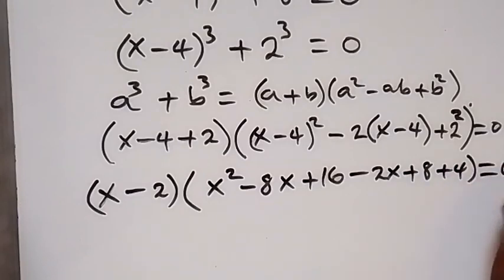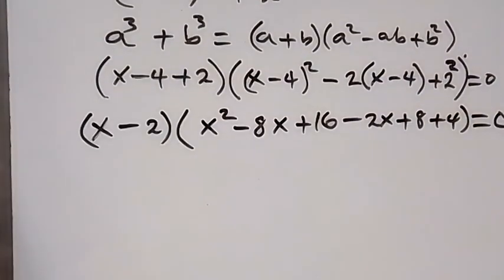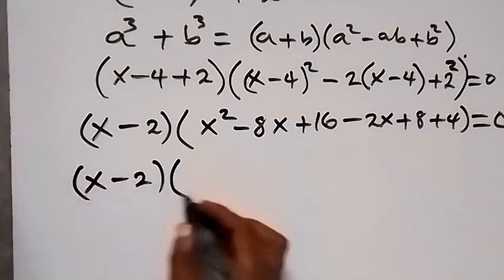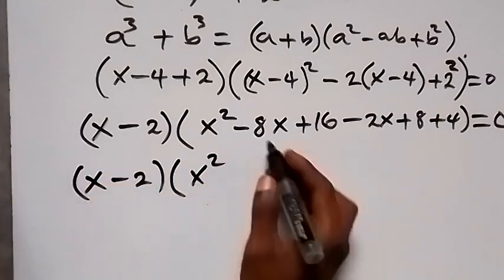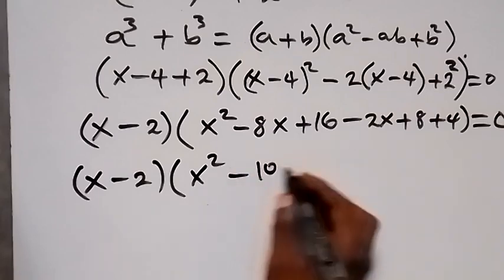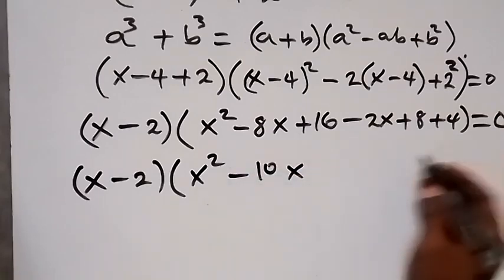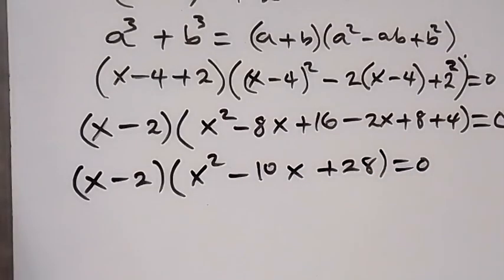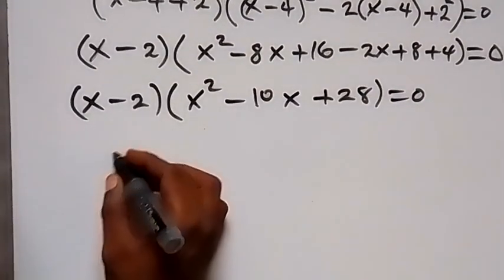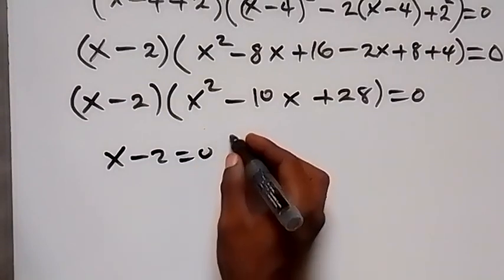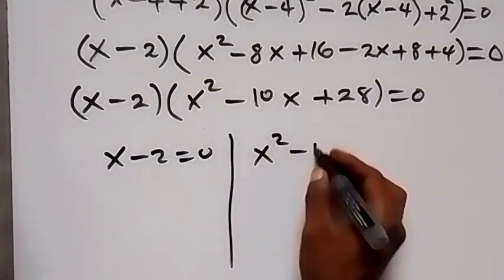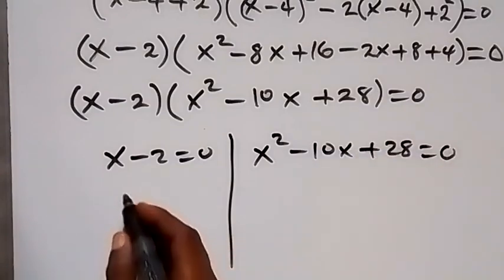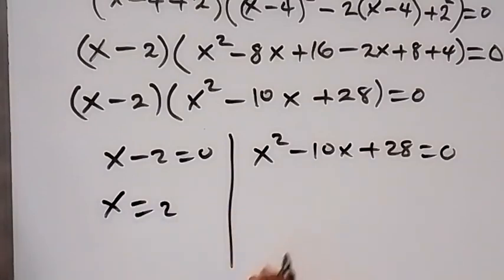2 squared is 4, so that equals 0. Collecting terms, we have x minus 2 multiplied by x squared minus 10x plus 28 equals 0. From x minus 2 equals 0, we get x equals 2. From the other factor, we have a quadratic equation x squared minus 10x plus 28 equals 0.